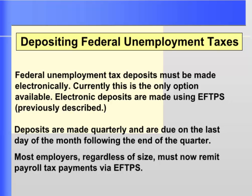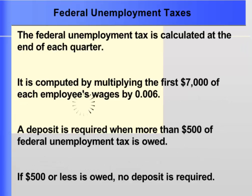Federal unemployment tax deposits must be made electronically. Most employers, regardless of size, must remit payroll tax payments via the Electronic Federal Tax Payment System, EFTPS. The federal unemployment tax is calculated at the end of each quarter, and if $500 or less is owed, no deposit is due.